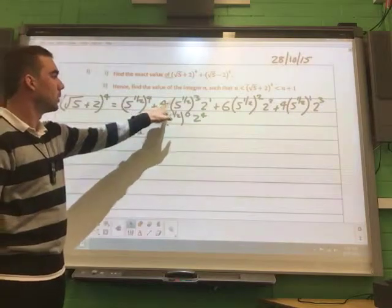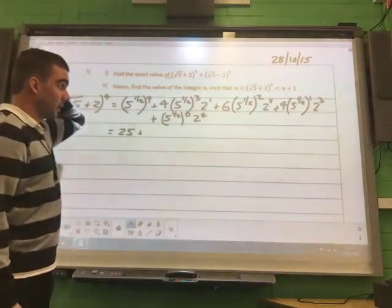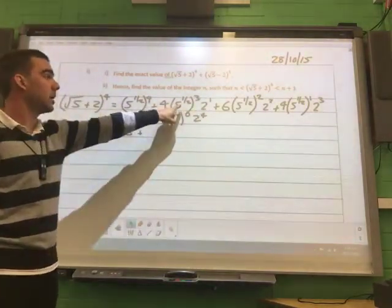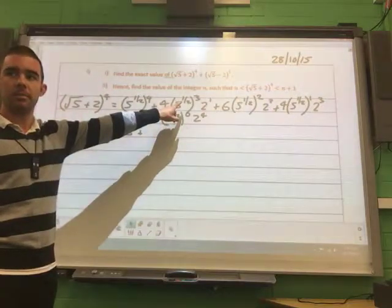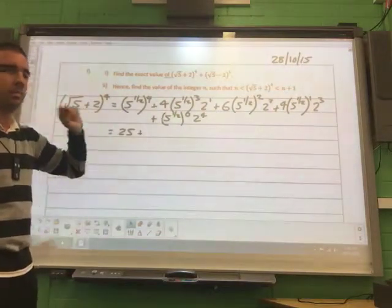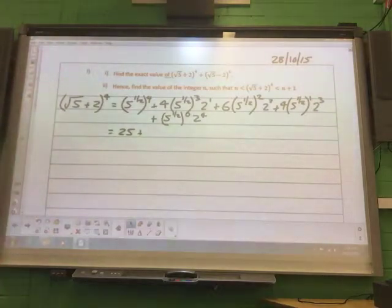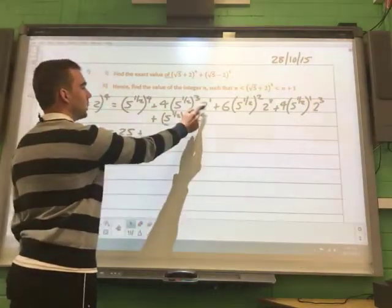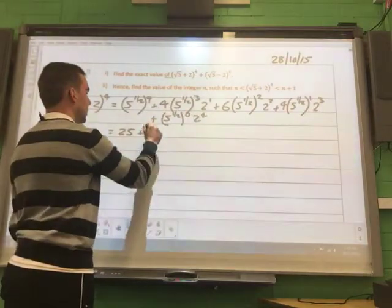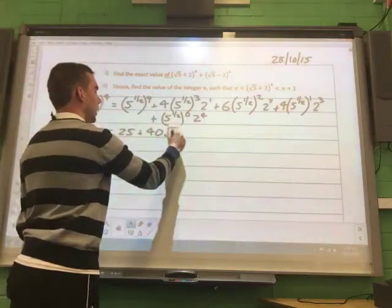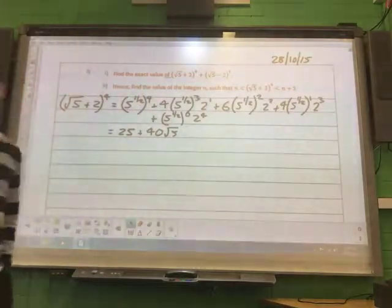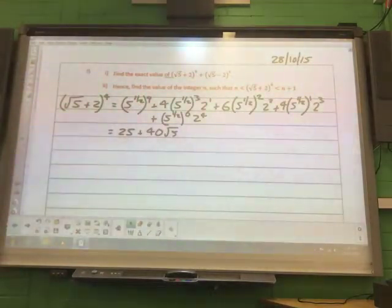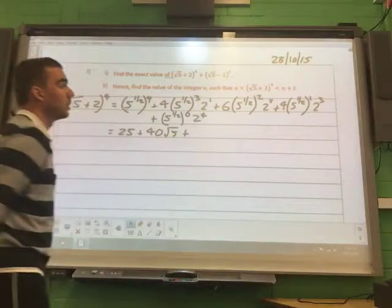Alright, so we've got 4 times 2, and then this is going to be 5 root 5. So you've got root 5 times root 5 times root 5. Yep, okay, so it'll be 4 times 2, which is 8, 8 times 5, which is 40. We're finding the exact value, so we need to leave it as surds in simplified form.